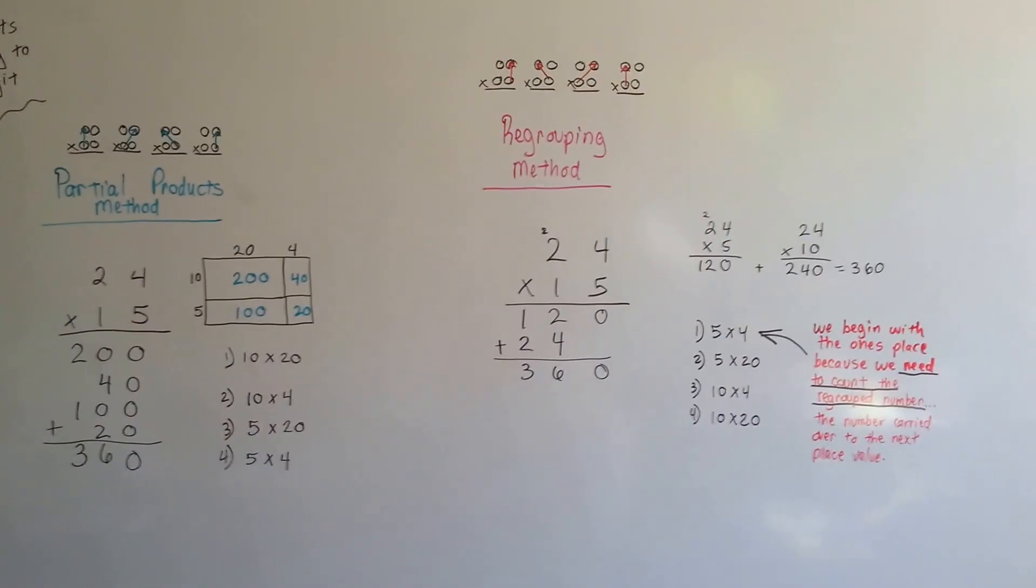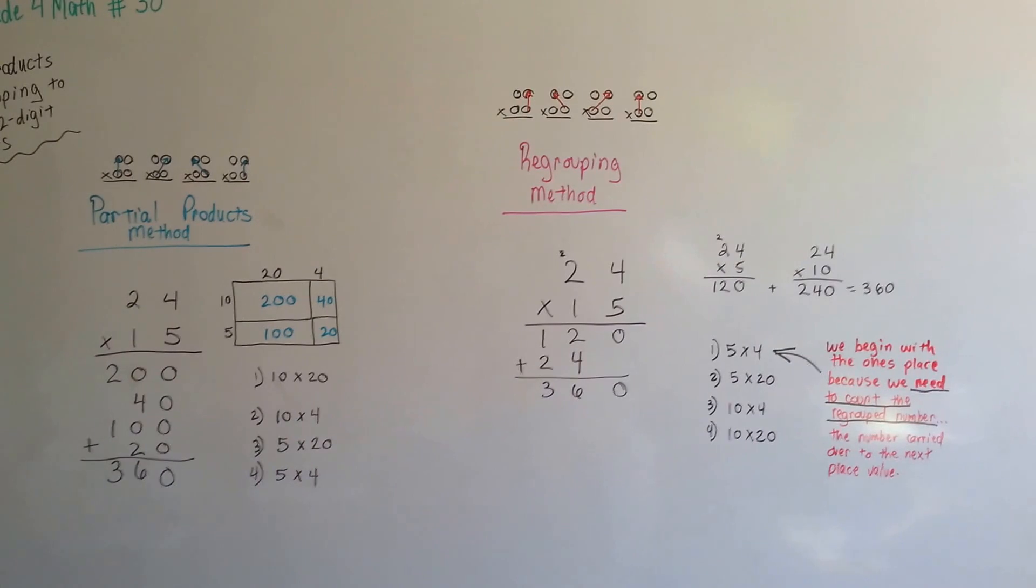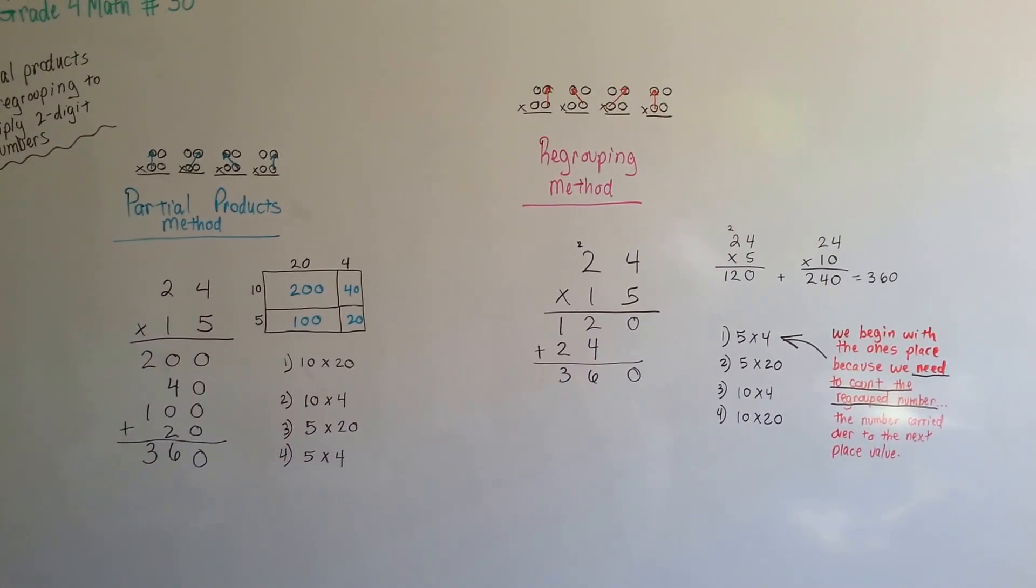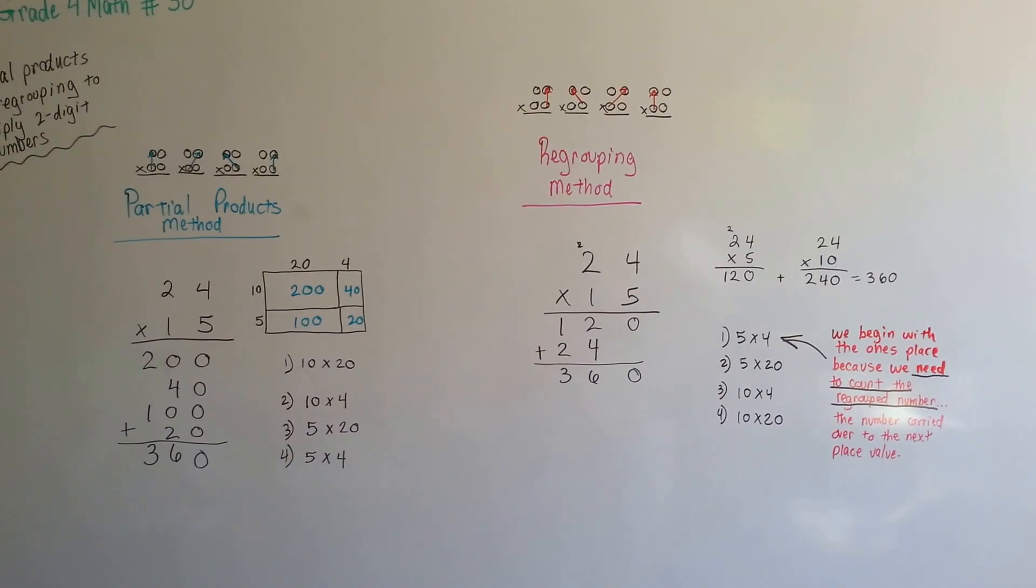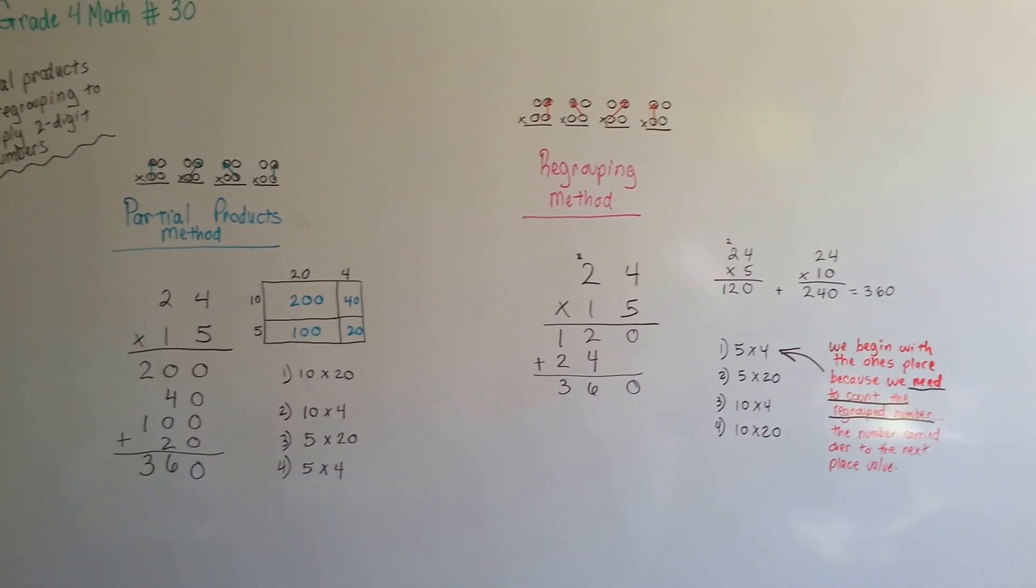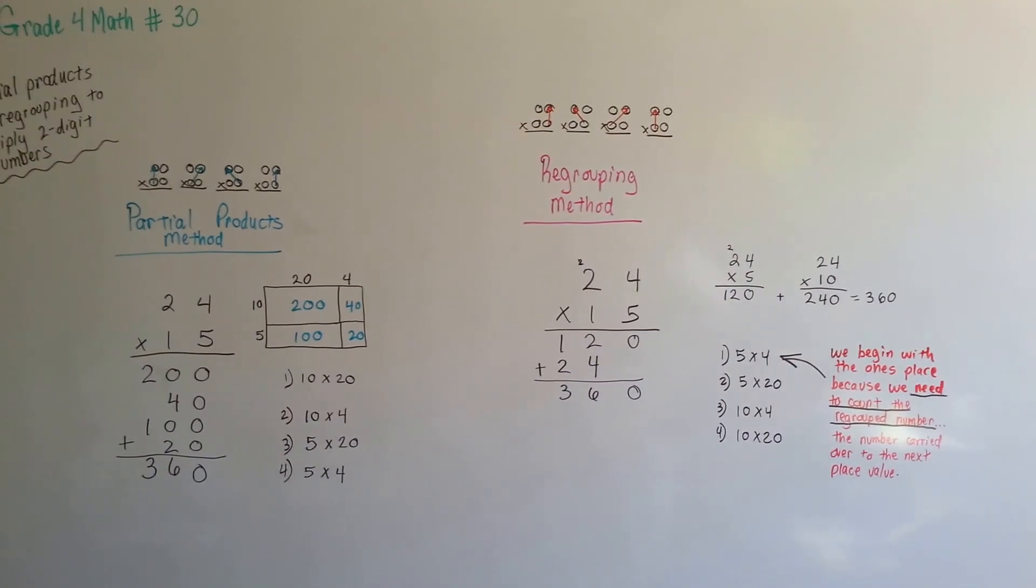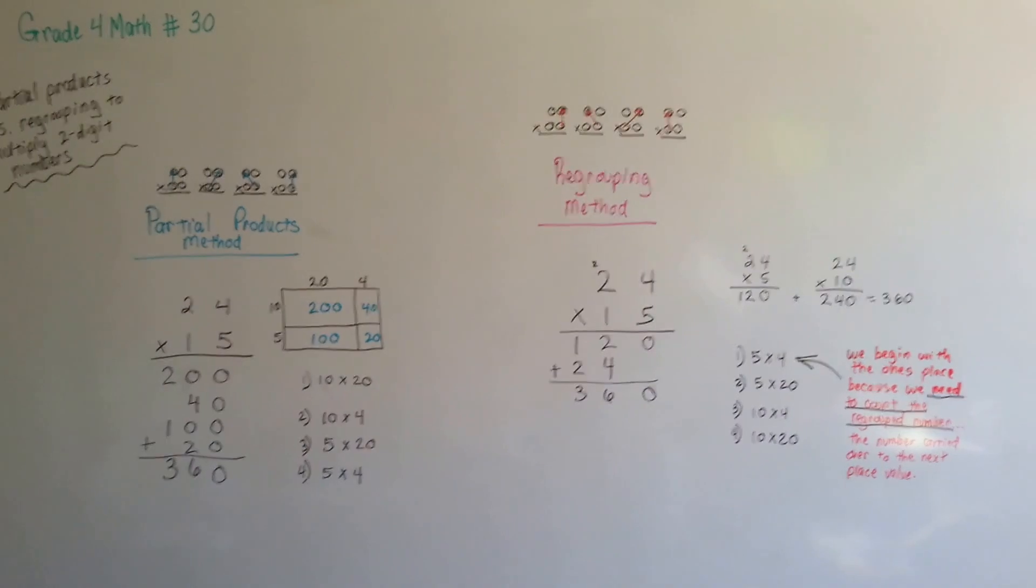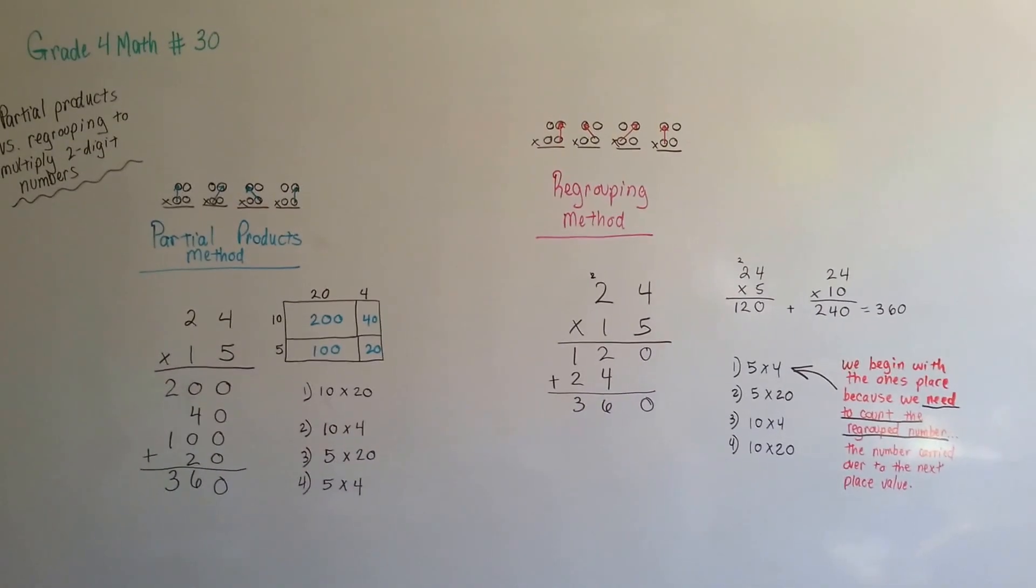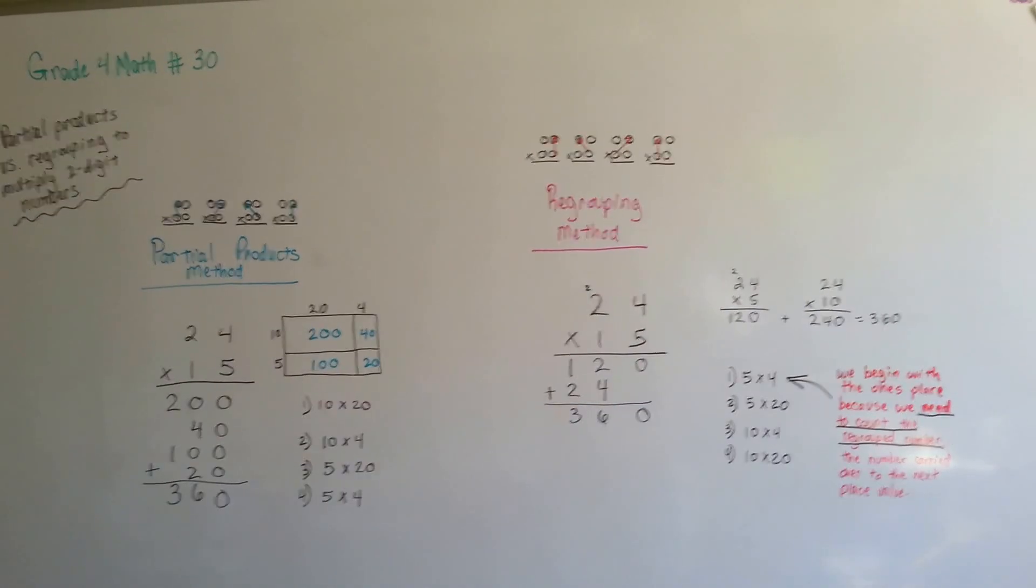Either way, you'll get the correct answer. Some people like one way more than another. I happen to like the regrouping method better. But it's important to teach both methods because someone might not understand one of the methods as well as another. And it doesn't matter how you got the answer. What matters is you got the answer. Plus, the state core says that the children need to know how to do this so that they understand place values and they understand multiplication.